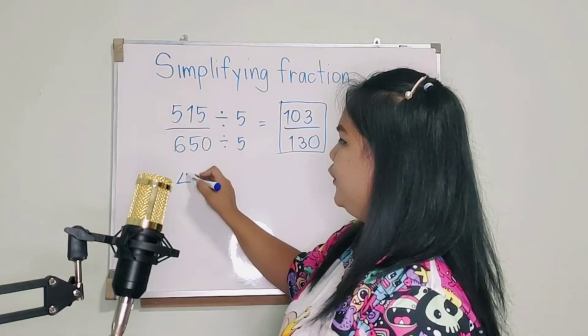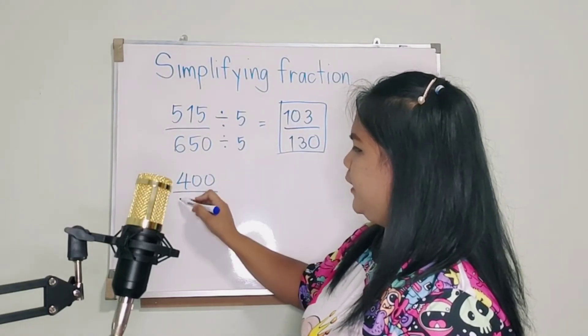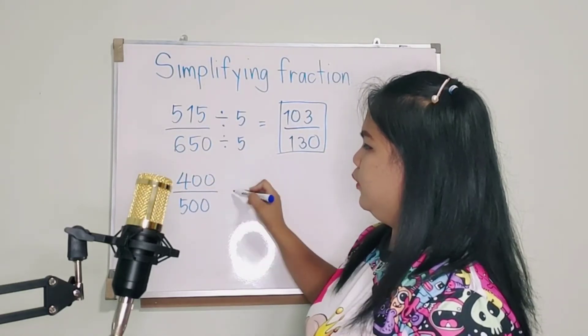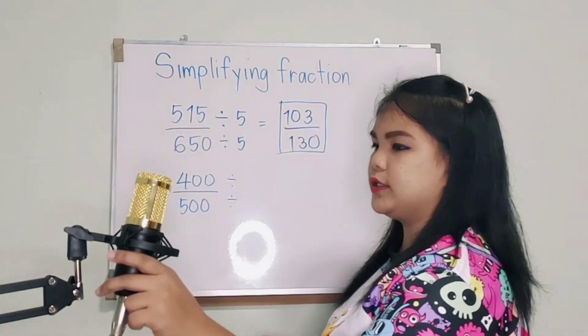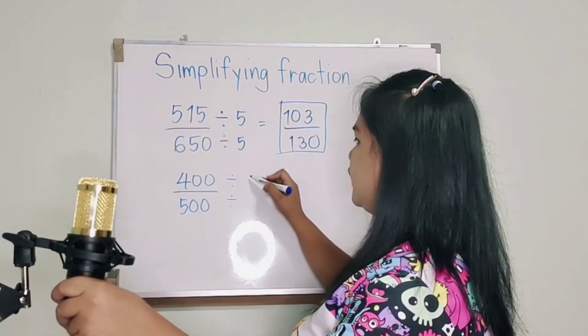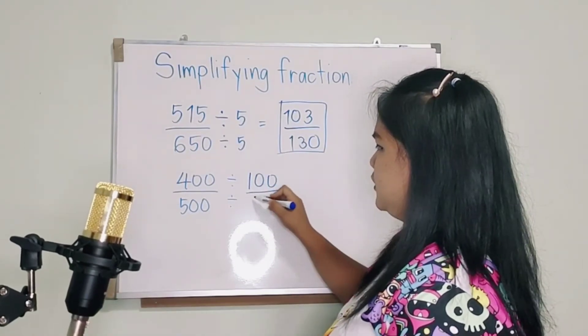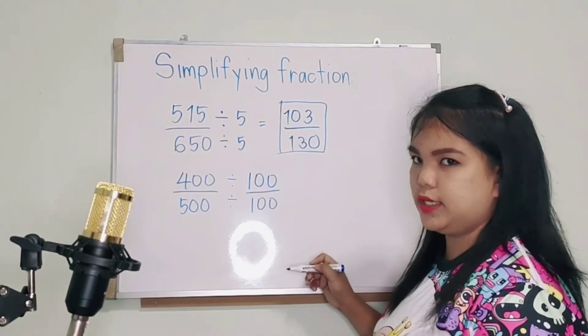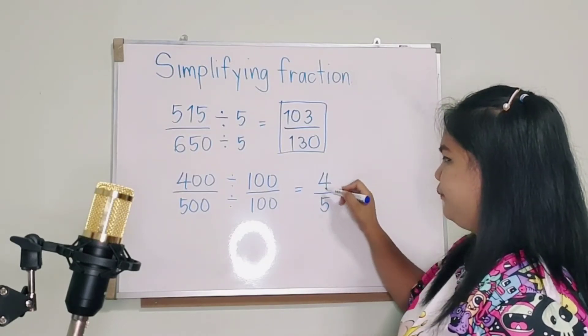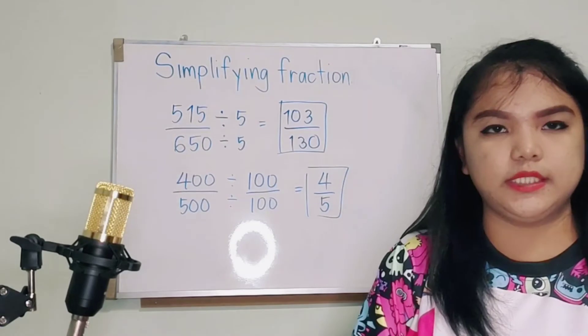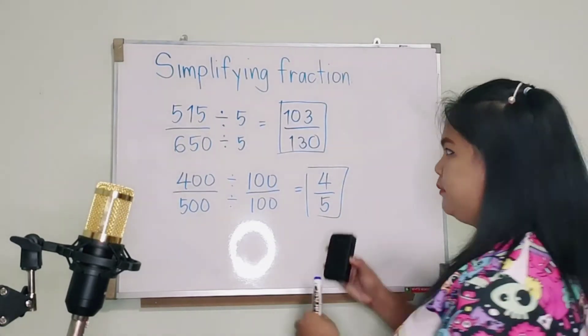Again, 400 divided by 500. What number can we divide? Both sides. Yes, correct. So we have 100. So we can divide it both sides by 100. So you will get what? 4 fifths. So you are going to make a fraction as the smallest as possible.